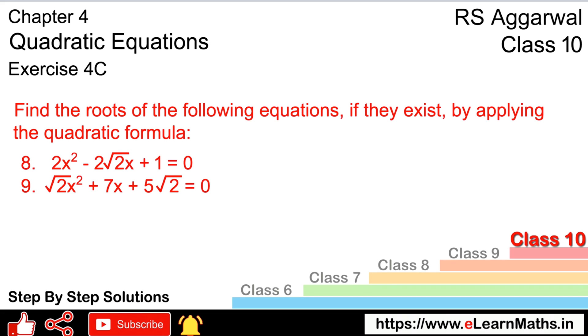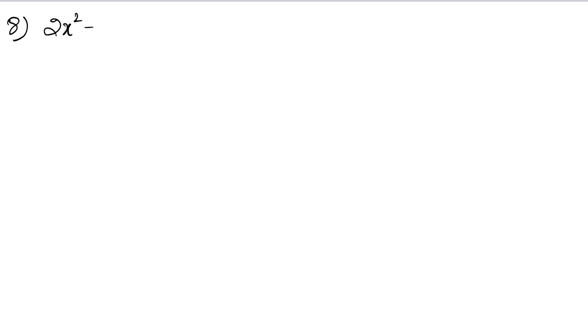Let's do question number 8 of exercise 4C on quadratic equations. The question is: find the roots of the following equations by applying the quadratic formula. Question 8 is: 2x² minus 2√2x plus 1 equals 0.